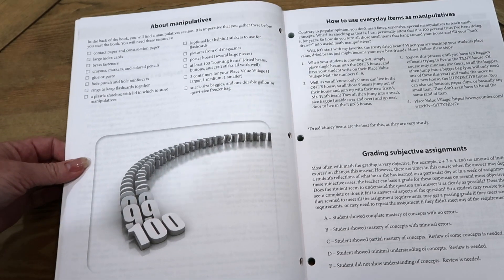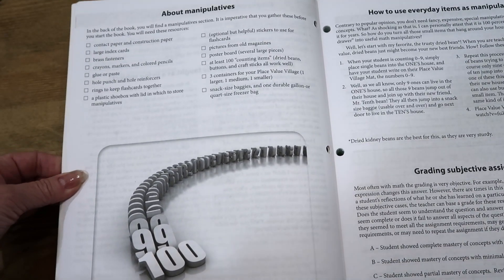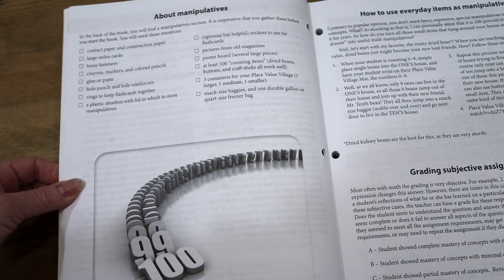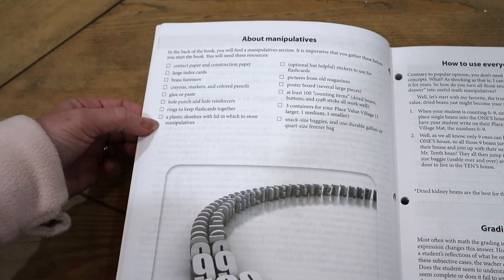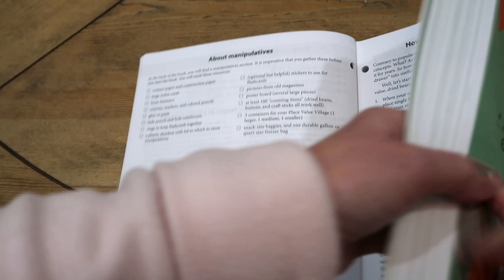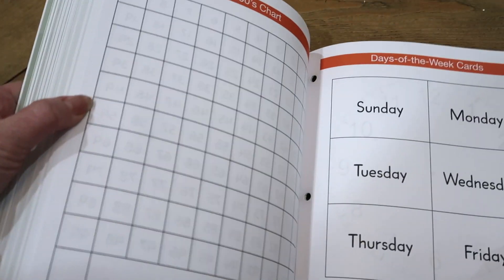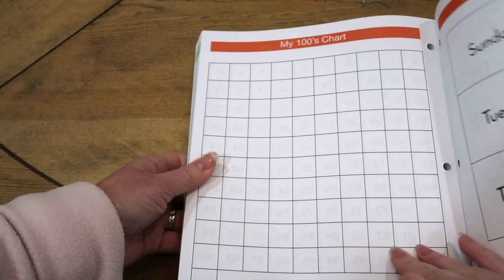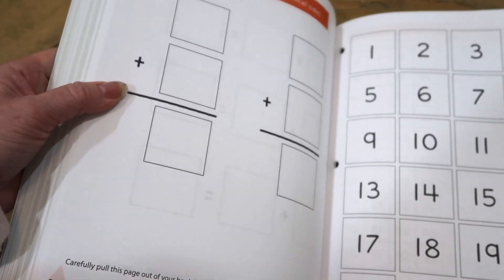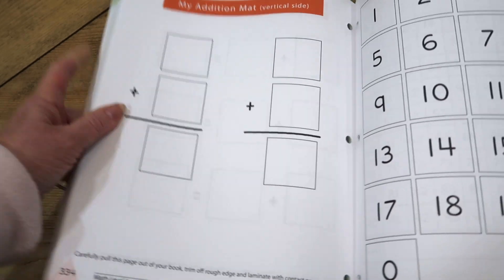If you're used to the Good and the Beautiful or some of the other math programs out there, they have a ton of manipulatives. Masterbooks really keeps it more simple. This is a list of things that you'll need. Some of the manipulatives actually come in the back of the book and they'll tell you to laminate some things. They've got some cards, days of the week cards, a 100 number chart. Some of the things I've already taken out because we've started using them. Some number cards, an addition mat, things like that.